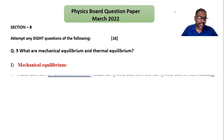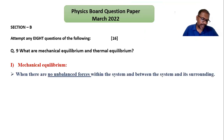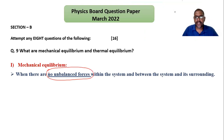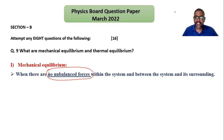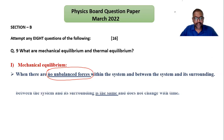What is mechanical equilibrium? When there are no unbalanced forces within the system — meaning all the forces are balanced — and no unbalanced forces between the system and its surroundings, then the system is said to be in mechanical equilibrium.